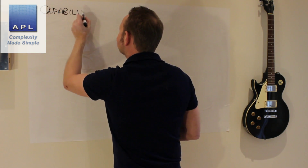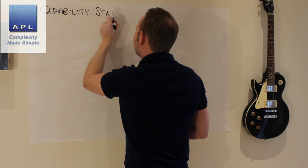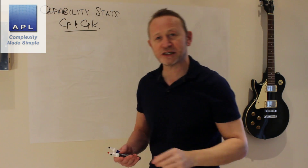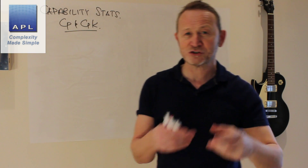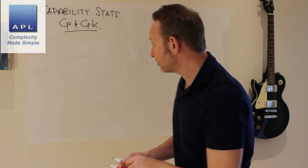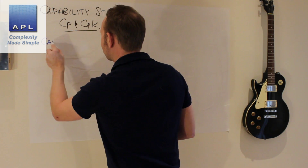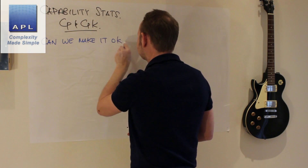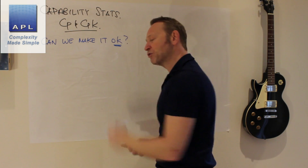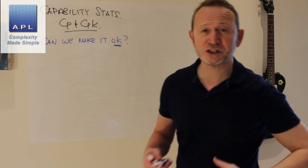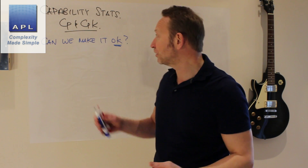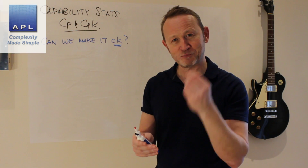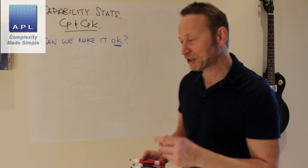These two statistics help you answer a very simple question — CP, CPK — that you should be answering right at the beginning of your new product introduction process or indeed your problem solving process. And it's this: Can we make it? Most of you are answering this question informally, by observation only. CP and CPK can help you make a much better decision. Better decisions save you money.